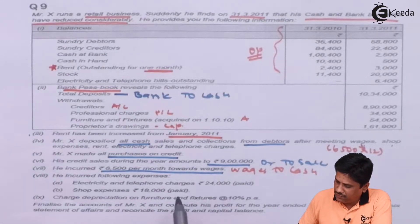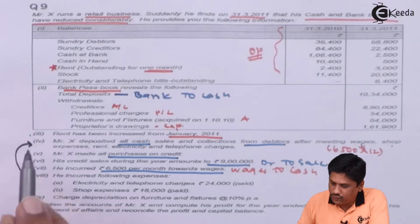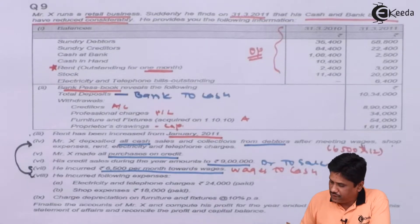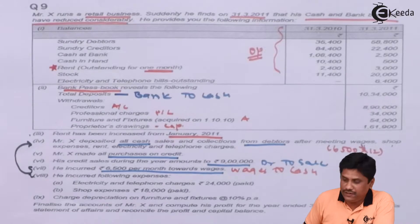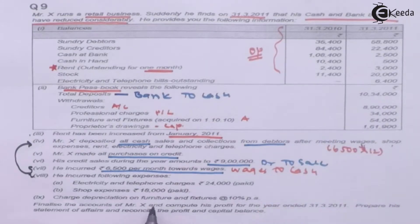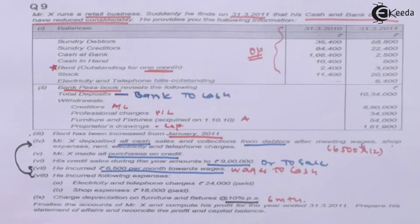He incurred following expenses: electricity and telephone charges 24,000 paid, and shop expenses paid. These two points connect with point number 4 — be careful, we will handle them simultaneously. If it is paid, the cash account will be credited and the respective account debited. Importantly, electricity and telephone bills are also outstanding, so we will adjust that. Depreciation on furniture and fixture at 10% per annum — the furniture was acquired on 1st October, so depreciation is for 6 months.